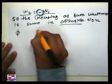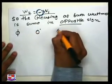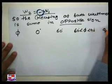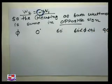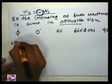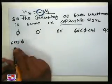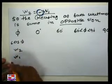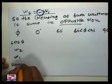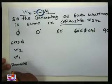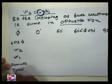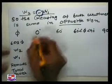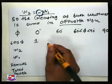Like a summary: first case, power factor = 1 (φ = 0°); second case, power factor = 0.5 (φ = 60°); third case, power factor between 0 and 0.5 (φ between 60° to 90°); fourth case, power factor = 0 (φ = 90°). We can draw this as a table with columns: cos φ, W2 reading, W1 reading, and remarks/total power.